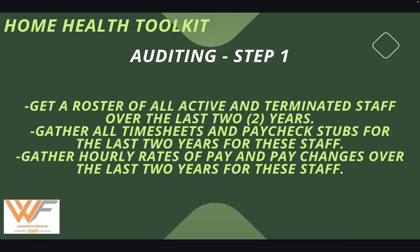Then you're going to gather all the timesheets and paycheck stubs for the last two years for these staff members — both active and terminated. The third thing is you need to get their hourly rates of pay and pay changes over the last two or three years, depending on how far back you go. So that's auditing step one.